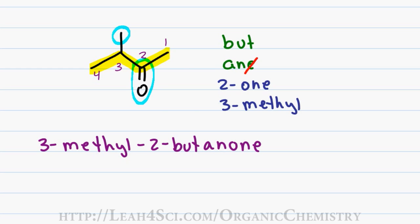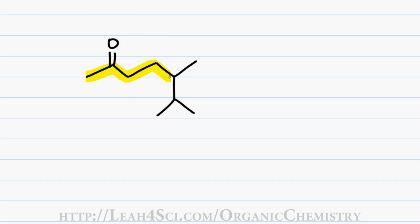Let's try a more complex example. In this case, it appears as if my parent chain is only 6 carbons long. However, don't be fooled by what appears to be a stray chain and instead go for your longest continuous carbon chain. My parent chain in fact has a total of 7 carbons.